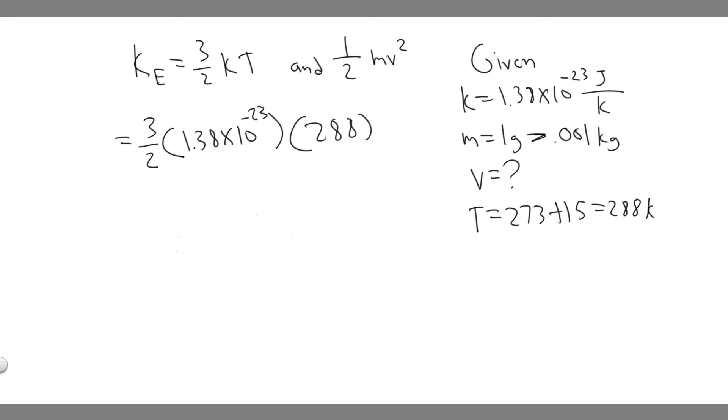So do 1.5 or 3/2 times 1.38 times 10 to the minus 23, then multiply it by 288. And so you're going to find it equals 5.9616 times 10 to the minus 21. Let's keep in mind, this is joules.